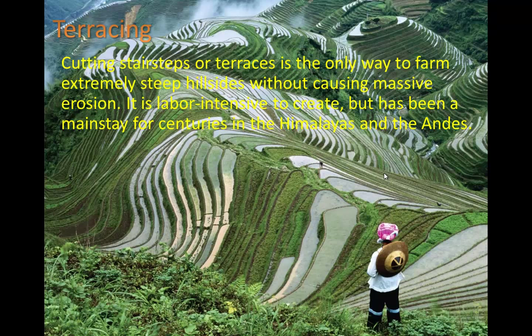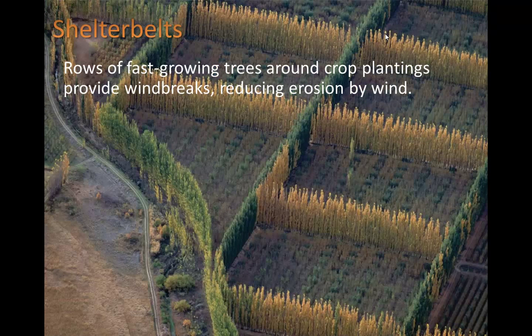Terracing means cutting steps or terraces into a hillside — it's the only way to farm extremely steep hillsides without causing massive erosion. It's labor intensive to create, but has been a mainstay for centuries in the Himalayas and the Andes. Everything is in steps, so water doesn't flow down easily — when it hits a flat spot, it stays and soaks into the ground. Shelter belts can reduce wind erosion. These are rows of fast-growing trees around crop plantings that provide windbreaks, reducing erosion by wind. When wind hits these trees, they slow it down so it doesn't cause as much erosion between the rows.